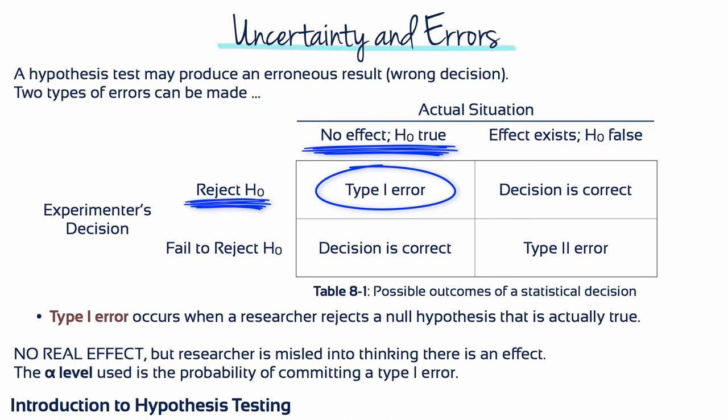A type 1 error is not a stupid mistake in the sense that a researcher is overlooking something obvious. On the contrary, the researcher is looking at sample data that appear to show a clear treatment effect, and then makes a careful decision based on available information. The problem is that the information from the sample is misleading. In most research situations, the consequences of a type 1 error can be very serious. Because the researcher has rejected the null hypothesis and believes the treatment has a real effect, it's likely they will report or even publish the results — but a type 1 error means this is a false report, leading to false results in the scientific literature. Other researchers may try to build theories based on those false results, wasting precious time and resources.